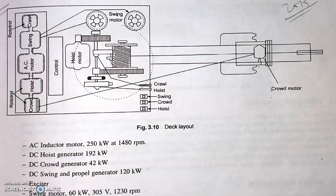There is a common shaft connecting the motor, generator, and exciter. The AC motor is energized by taking power from the HT line, which finally drives all the generators. All the generators are DC generators. The crowd generator supplies power to the crowd motor, the hoist generator to the hoist motor, and the swing generator supplies power to the swing and propel motors.